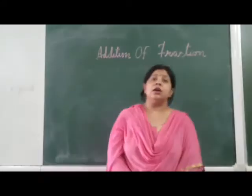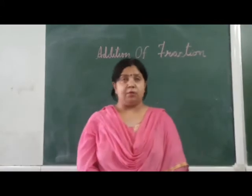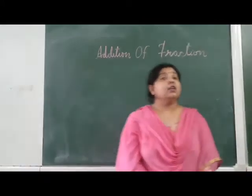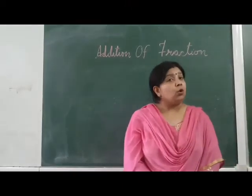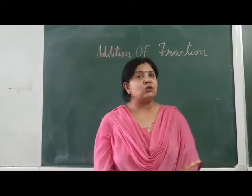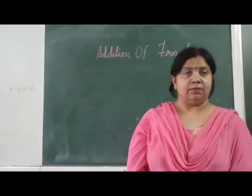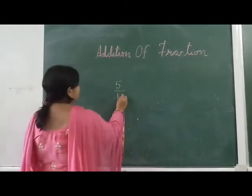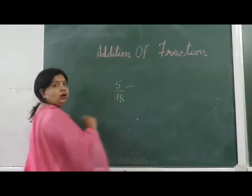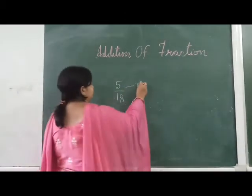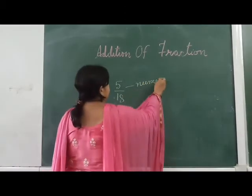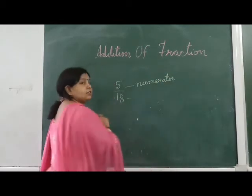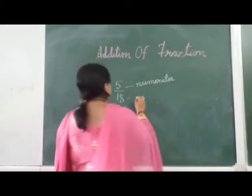The numeral written above the line segment is called the numerator. And the numeral below the line segment is called the denominator. Like five by 18 — five is called the numerator and 18 is called the denominator.